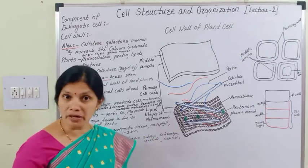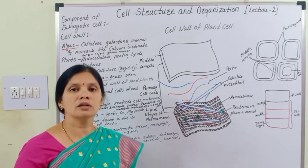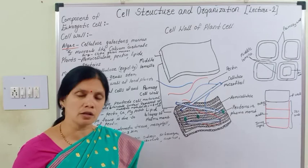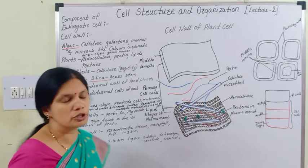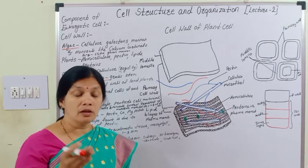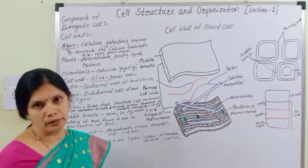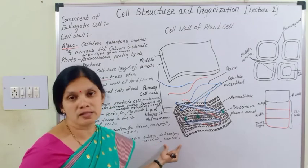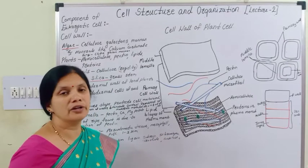In this secondary cell wall there is a deposition of lignin, suberin, along with cellulose, hemicellulose, and pectic components. There is also a deposition of silicate and cutin in some plants. This secondary cell wall is observed in sclerenchyma, tracheids, and cork cells.